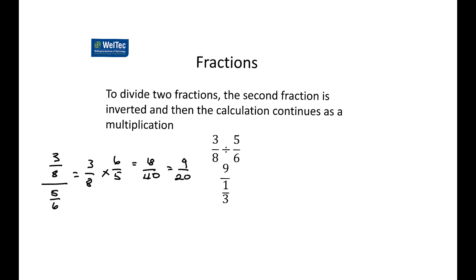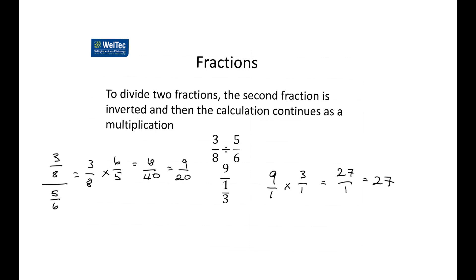To divide fractions, we invert the second fraction and multiply. So 3 over 8 divided by 5 over 6 equals 3 over 8 times 6 over 5, which is 18 over 40, simplified to 9 over 20. For 9 divided by one-third — thinking about how many thirds are in 9 — we do 9 over 1 times 3 over 1, giving 27 over 1, which is 27. That makes sense: there are 27 thirds in 9.